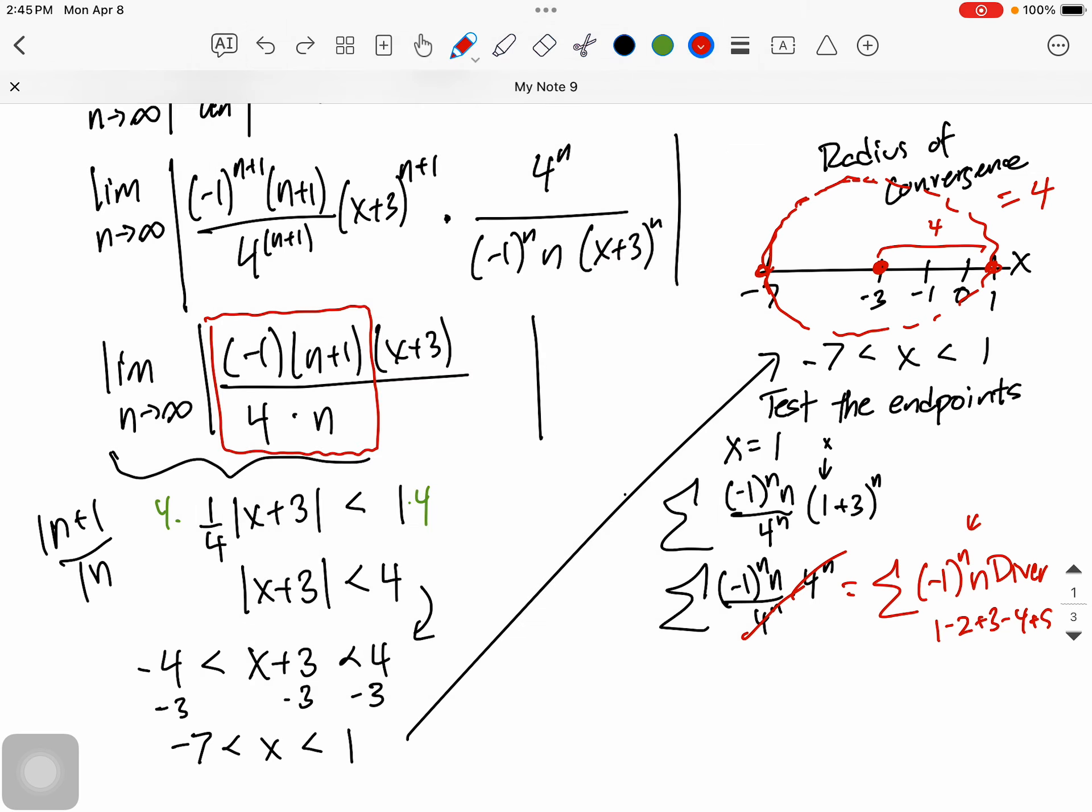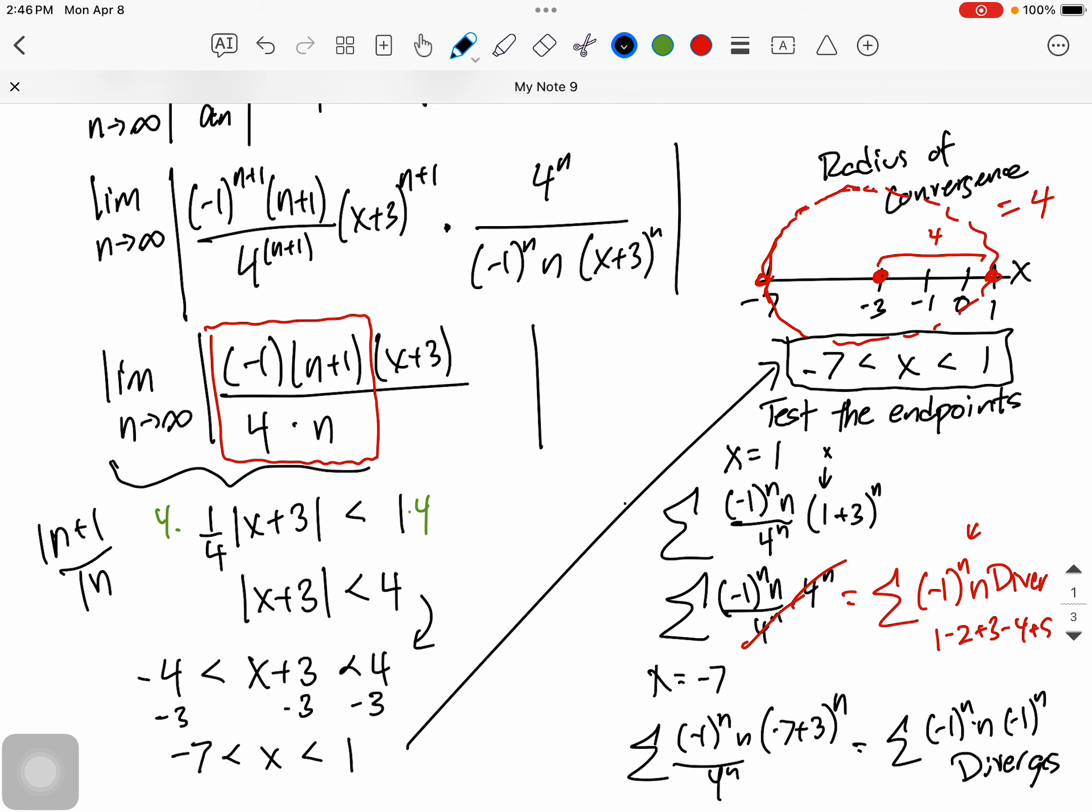Now, I would have to do the same thing with the other end point. Meaning, if I test x equals negative 7, I'm going to speed up a tiny bit. What I have is negative 7 plus 3. And what I end up with, if I simplify this, is negative 1 to the n times n. And then I have another negative 1 to the n. There's some algebra in here that's kind of gnarly. But this also diverges. You can pause the video and mess around with it if you want. But what does that mean? It means that this is the final interval of convergence. And the end points were not included. Again, if they were included, they would become less than or equal to's. But that would be the final interval of convergence. And then I said the radius of convergence is 4.